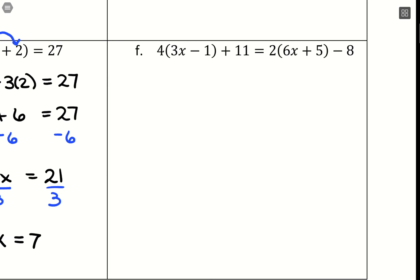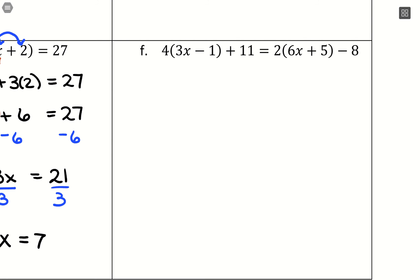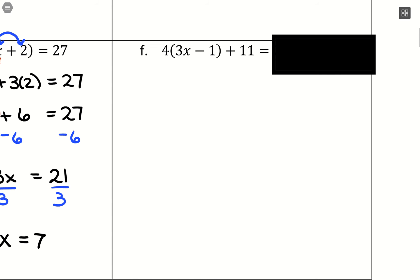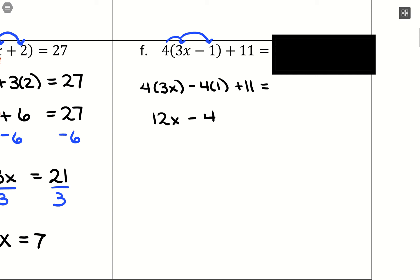This problem has a lot going on, so we simplify both sides of the equation first. On the left-hand side, distribute the 4: 4 times 3x minus 4 times 1, plus 11 on the outside, giving 12x minus 4 plus 11. Combining like terms, negative 4 and plus 11 gives plus 7, so the left side simplifies to 12x plus 7.